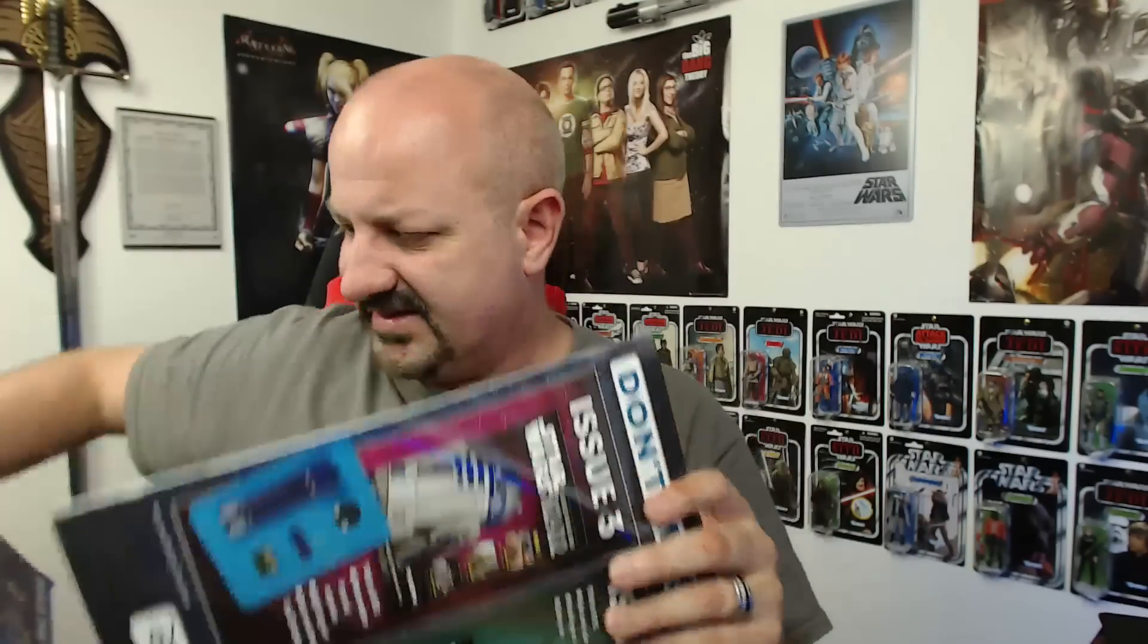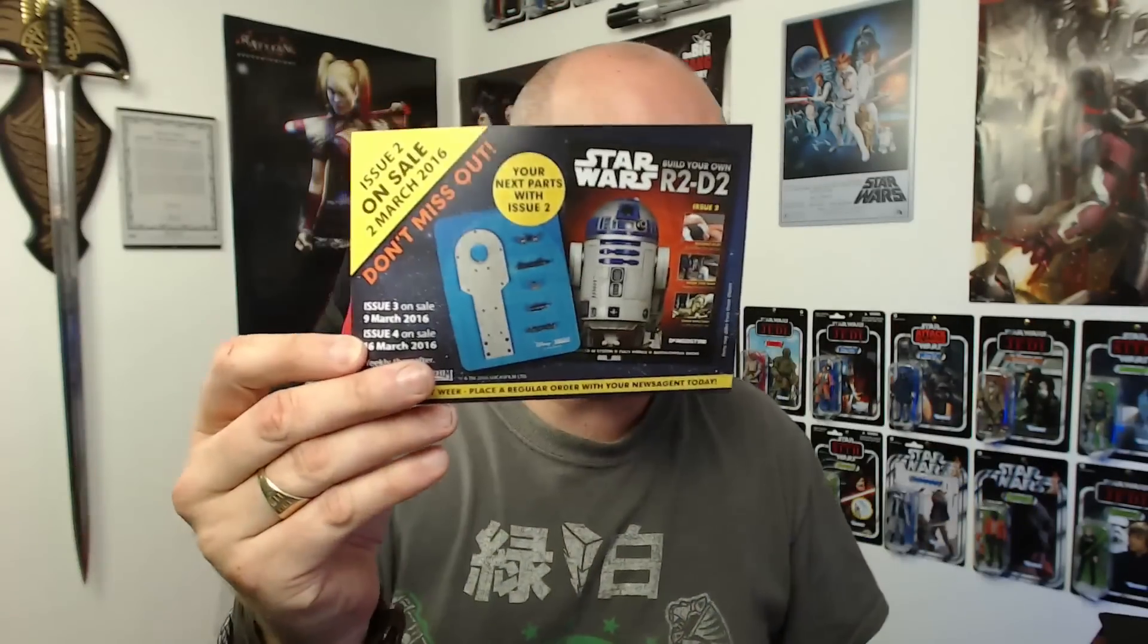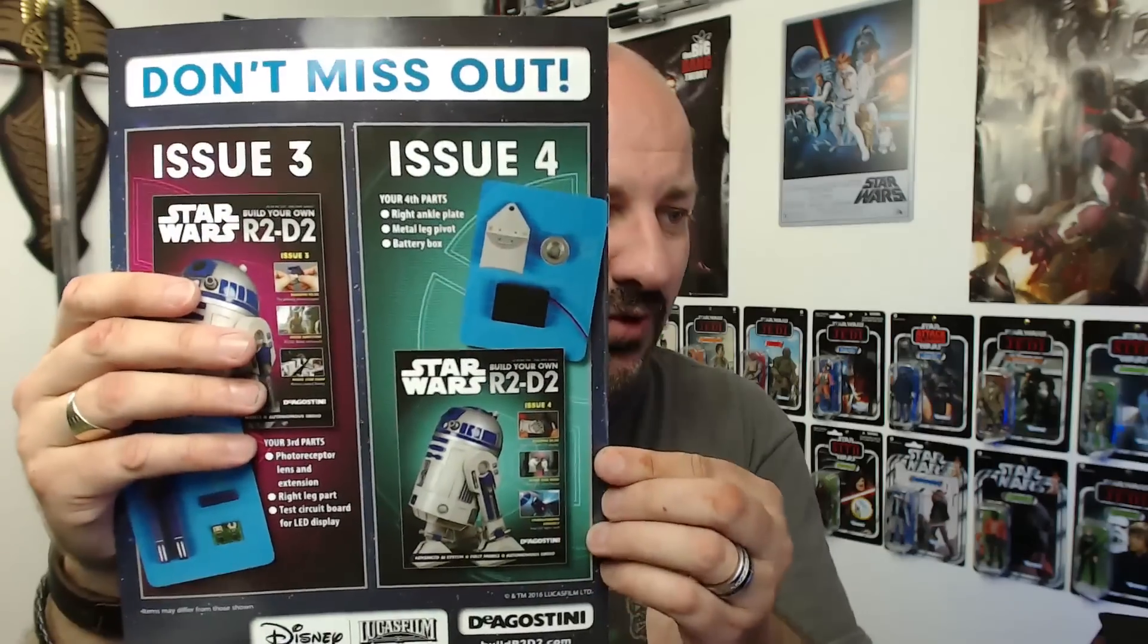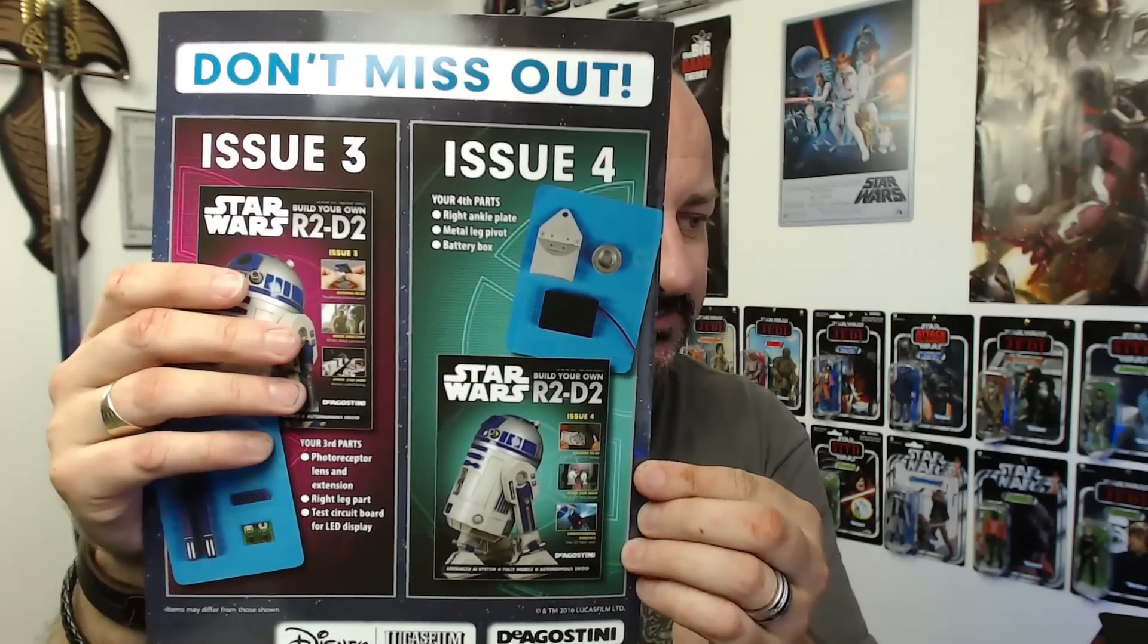So that's issue one that I showed you there and we also received issue two which looks like that pretty cool. And again everything what's going on in the issues here. Now issue one was about two ninety nine I believe, issue two is six ninety nine and then I think the regular price is eight ninety nine. Look another thing here, issue two on sale the second of March, issue three on the 9th of March, issue four on the 16th of March weekly thereafter. See there's nothing on here that says it's a trial. They've even told me what's coming in issue four.